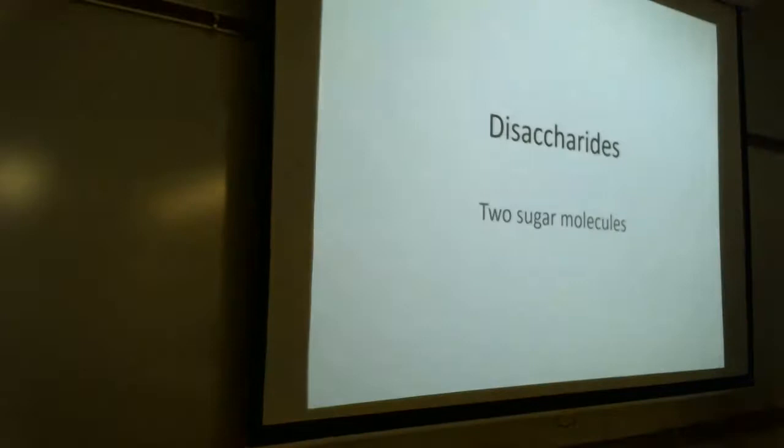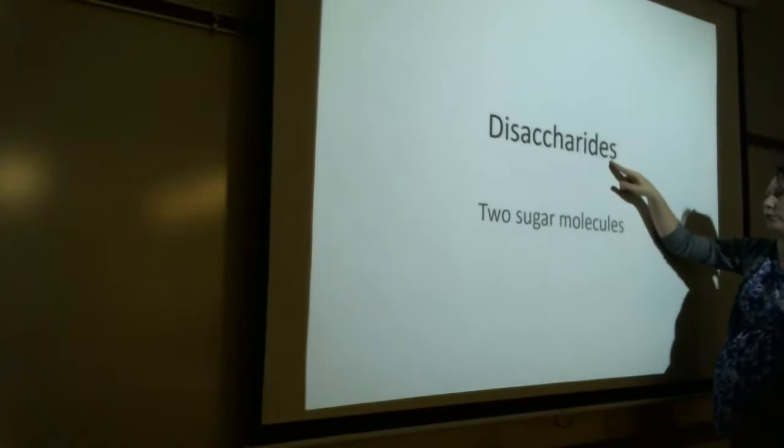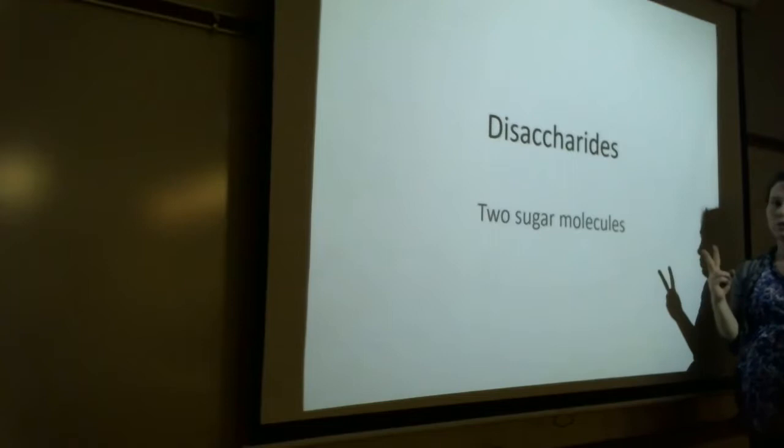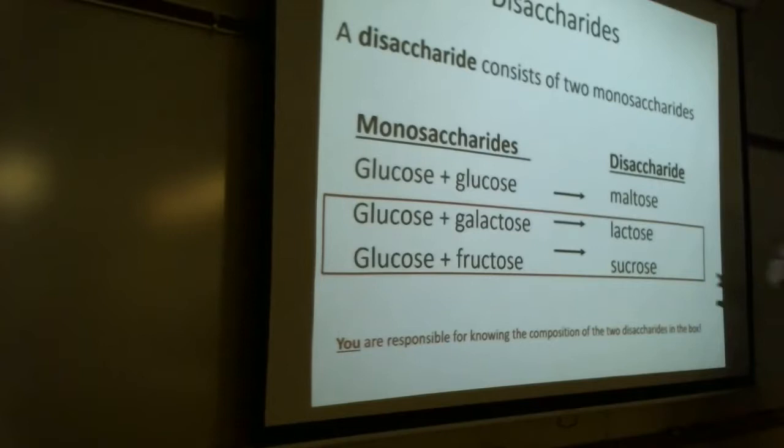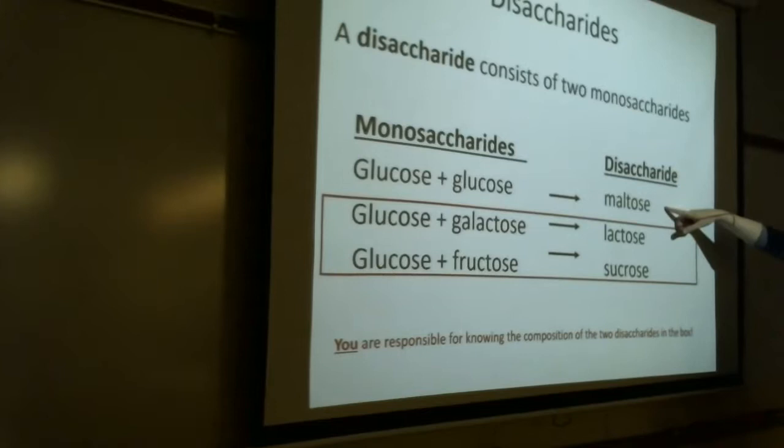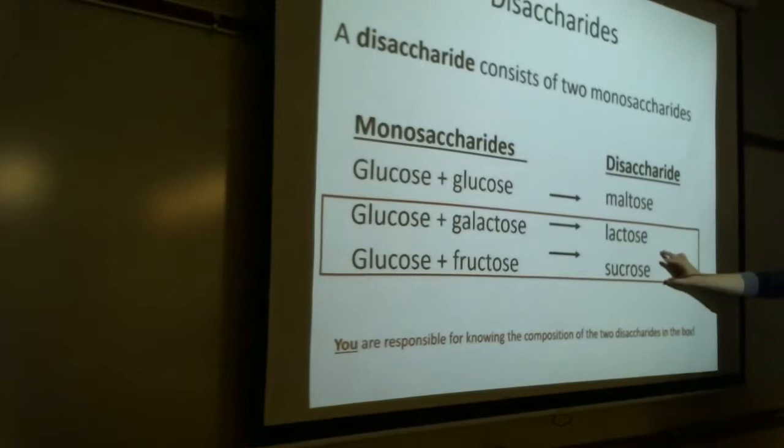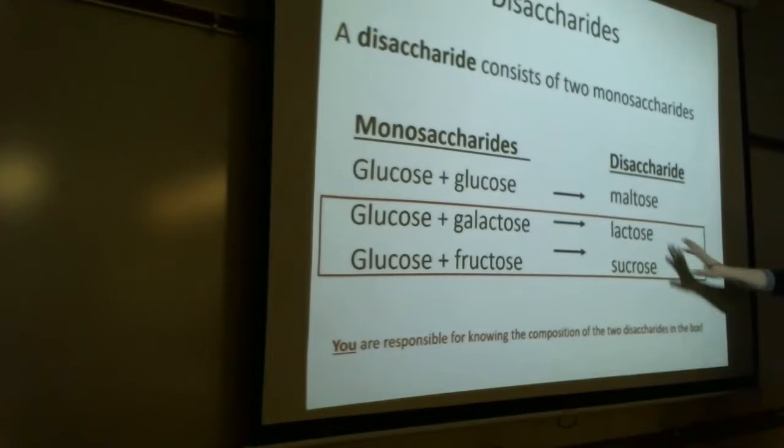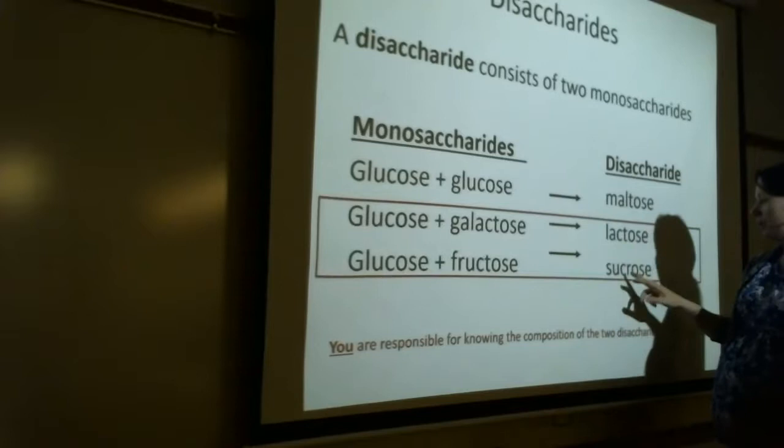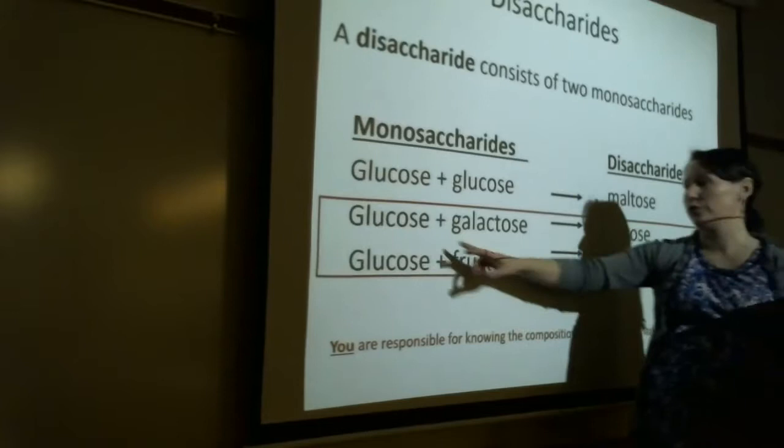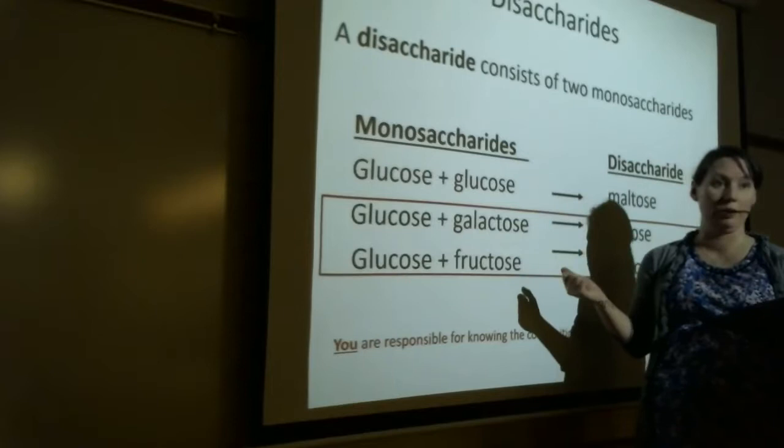Let's talk about disaccharides. Di meaning 2, and saccharide refers to sugar. That's just a generic word for sugar. So a disaccharide has 2 sugars linked together. These 2 disaccharides you need to know. I'm not going to make you memorize maltose, but lactose and sucrose are ones that you come into contact with very frequently. Lactose is made of glucose and galactose, and sucrose is made of glucose and fructose. And by the way, you know the structures for glucose, galactose, and fructose already. You know these 3, those are the ones that you're required to learn.